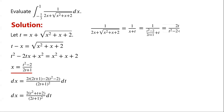This is equal to (2t plus 1) over (t squared minus 2 plus 2t squared plus t). The denominator can be simplified and written as 3t squared plus t minus 2.